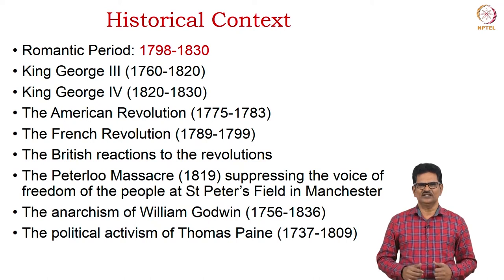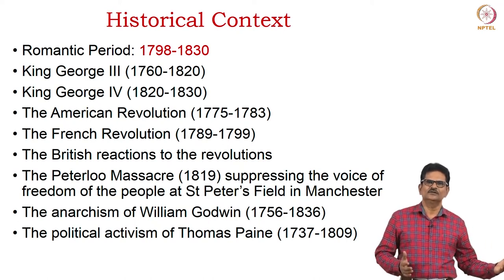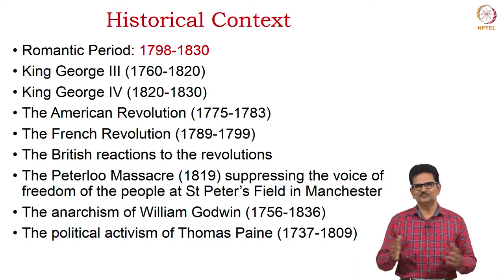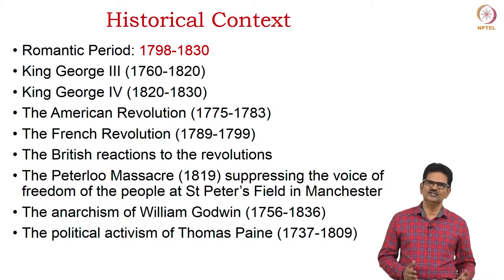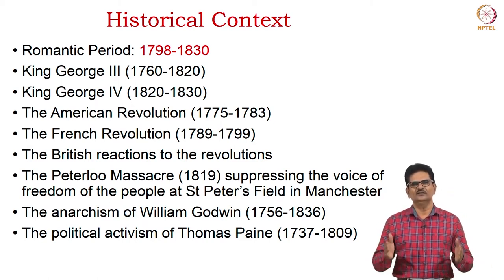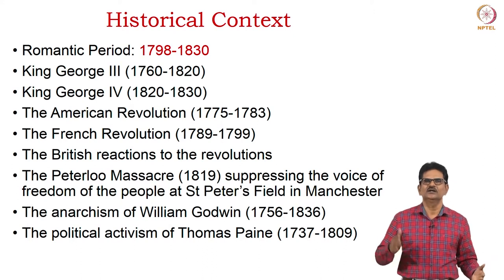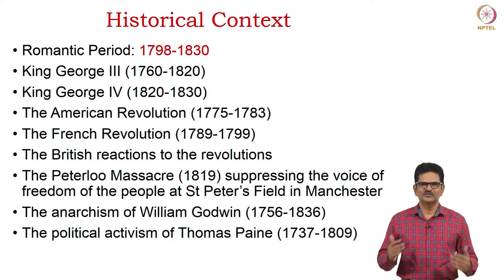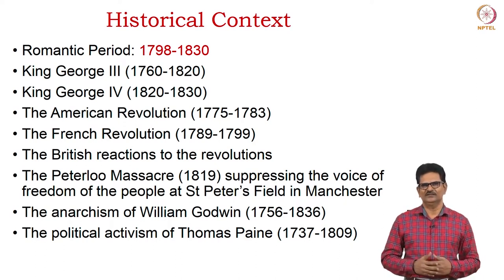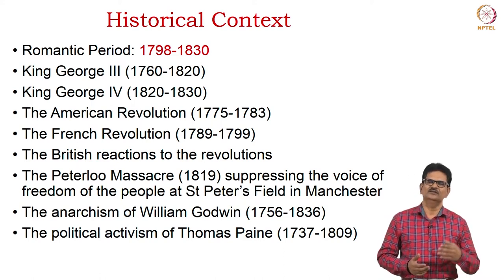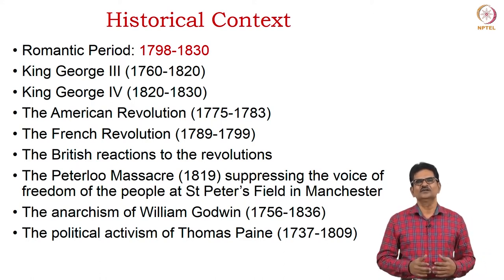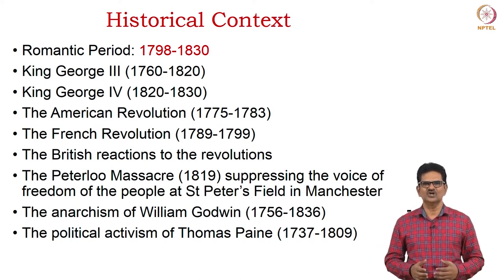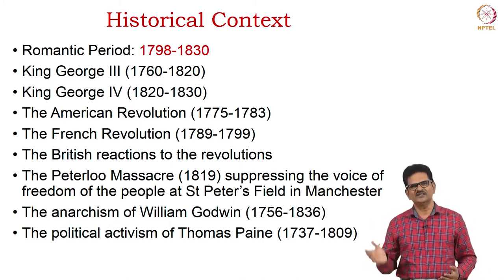When we come to the historical context, we can see that the Romantic period begins from 1798 and ends in 1830. This periodization may vary from critic to critic, from text to text, but we will use this period 1798 to 1830 as the period for Romantic poetry. We need to consider two rulers of England: King George III from 1760 to 1820, and then King George IV from 1820 to 1830.